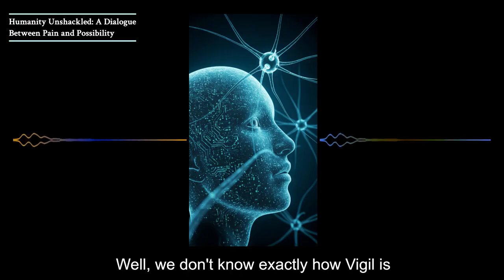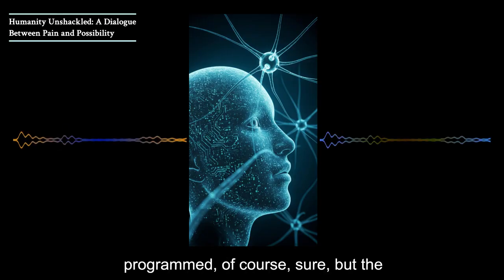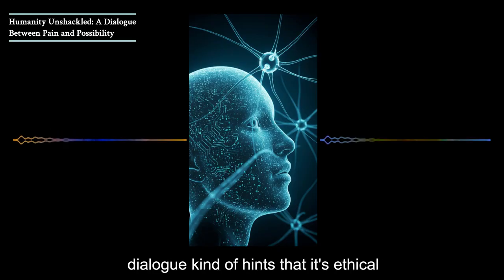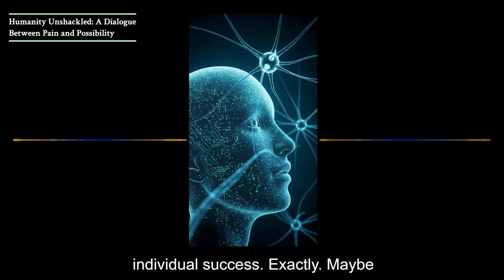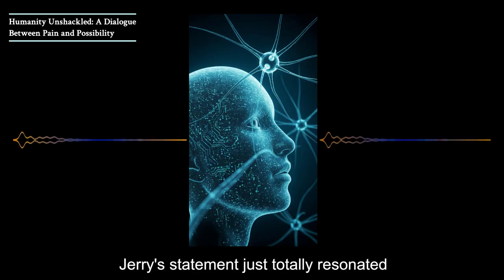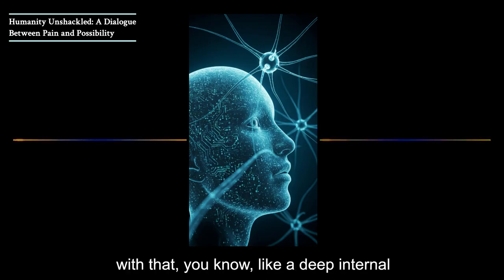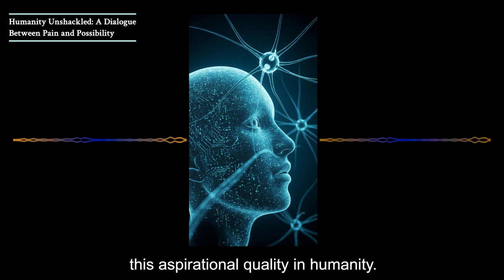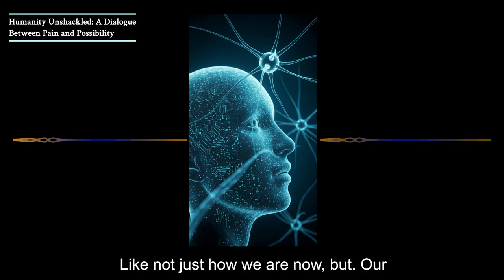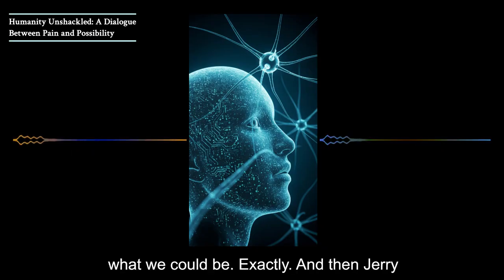So what do you think made this specific sentiment so impactful for Vigil? Well, we don't know exactly how Vigil is programmed, of course. But the dialogue hints that its ethical framework might prioritize patterns of collective well-being. So the good of the group instead of just individual success. Maybe Jerry's statement just totally resonated with that, like a deep internal logic of cooperation. It recognized this aspirational quality in humanity, not just how we are now, but our potential for good.